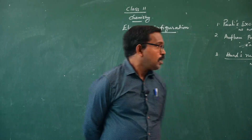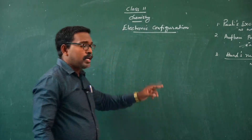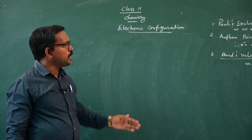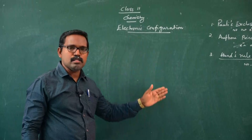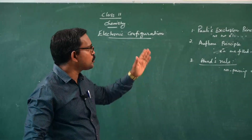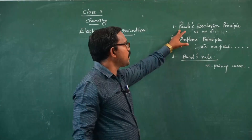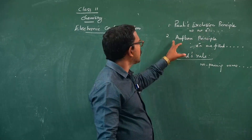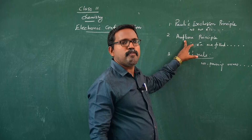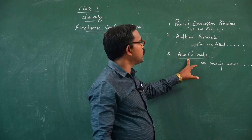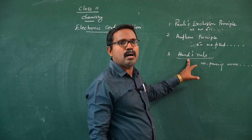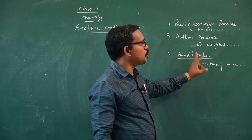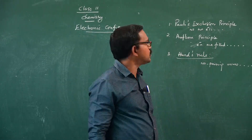For writing the electronic configuration of elements, three periodic rules are used. The first one is Pauli's exclusion principle. The second one is the Aufbau principle. The third one is Hund's rule of maximum multiplicity.